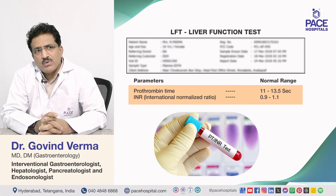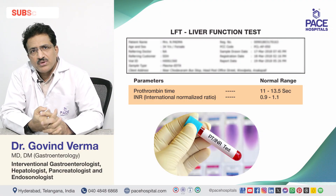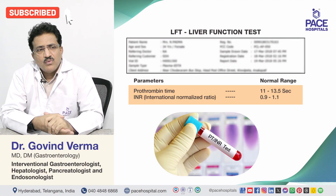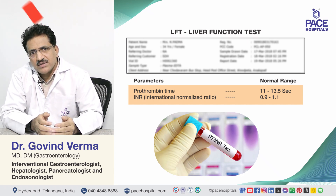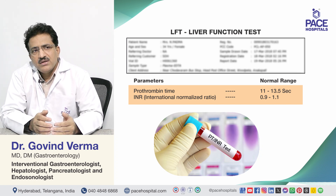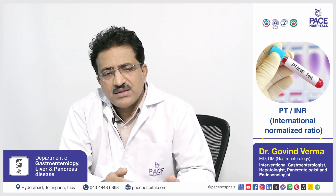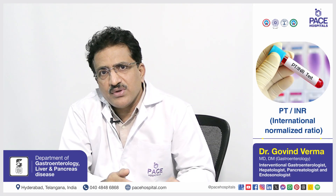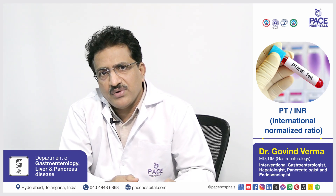One of the most important parameters under liver function test is prothrombin time. For standardization, we consider INR — international normalized ratio — as a standardized way of knowing the prothrombin time test valuation, since the prothrombin time normal values can change from lab to lab. So INR is a more standardized way of knowing it.